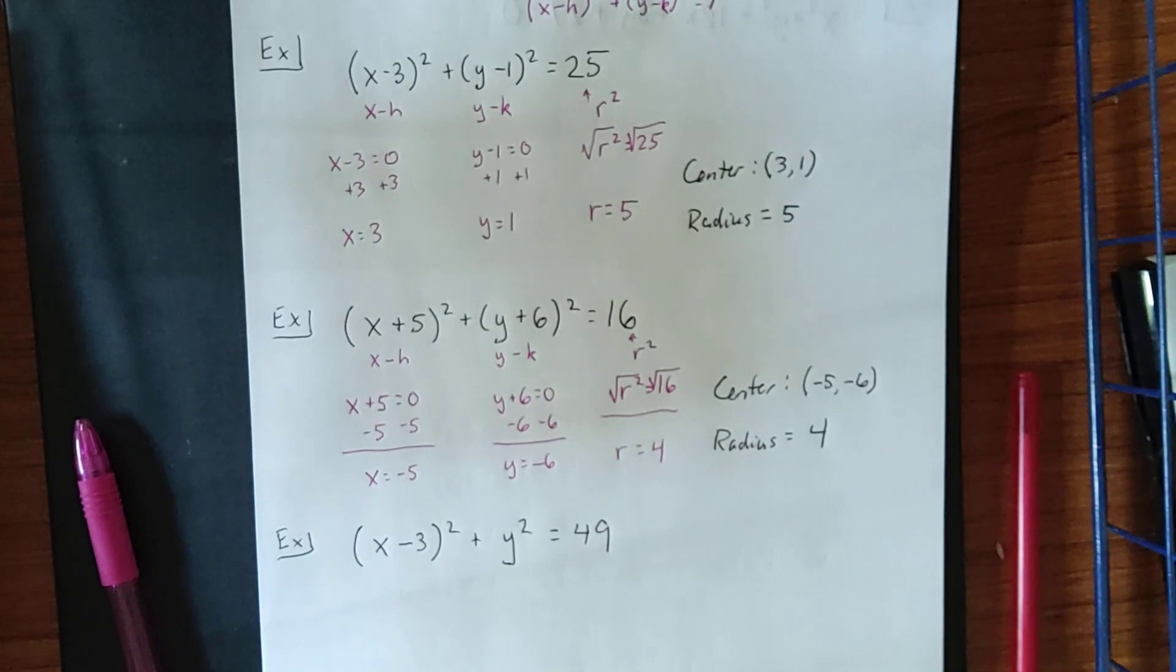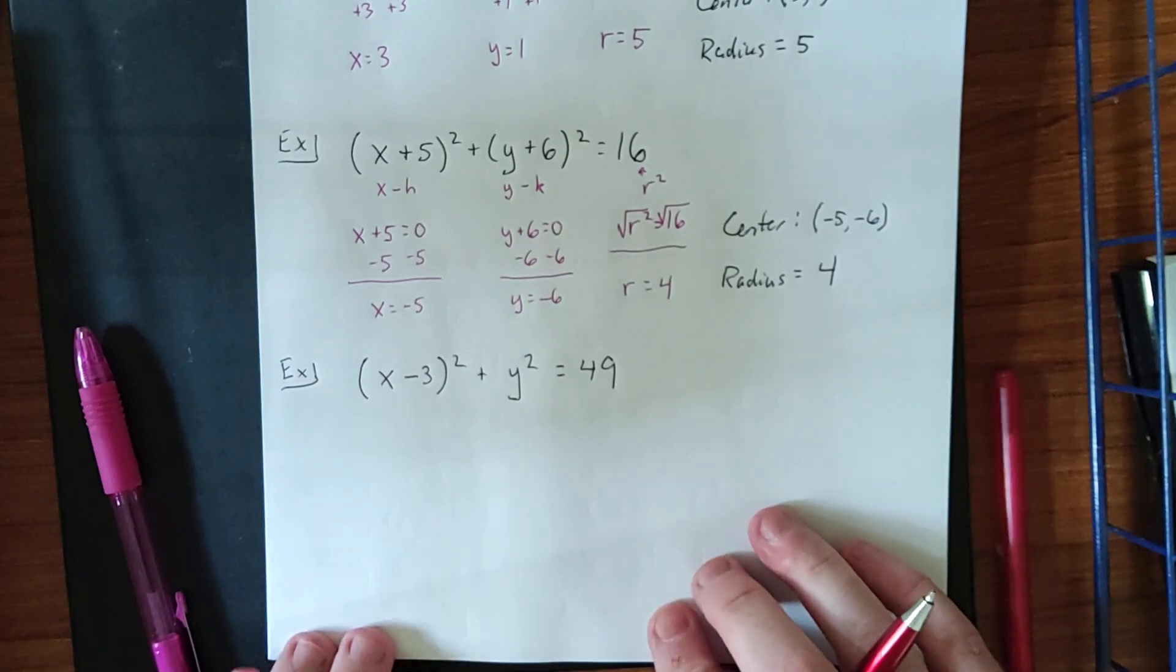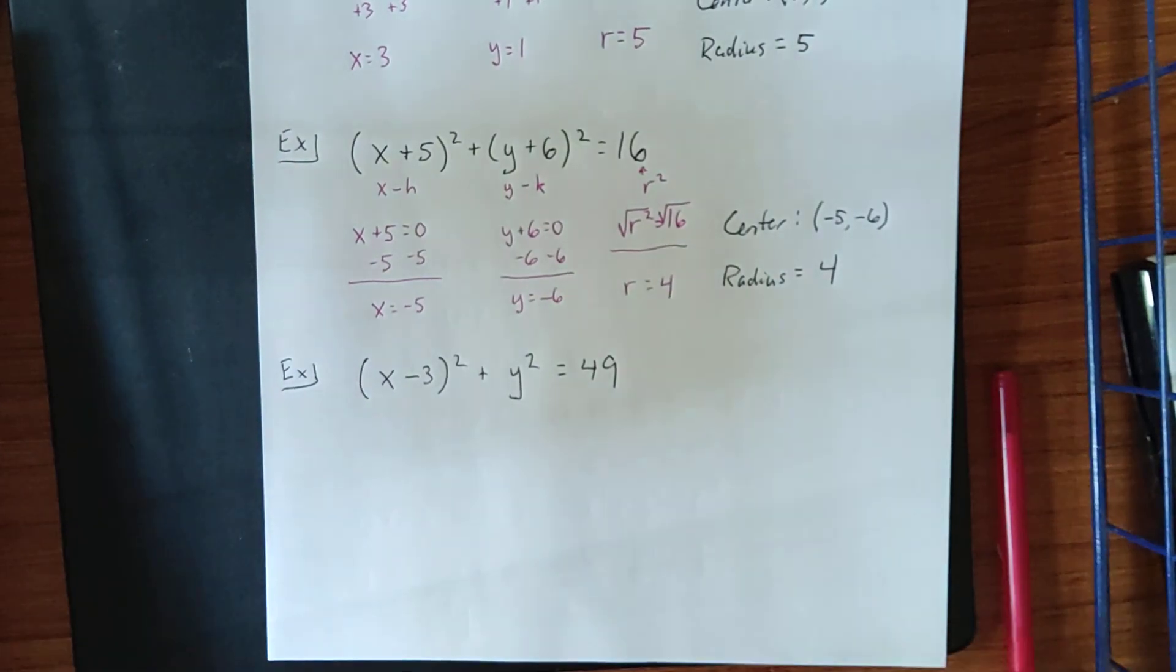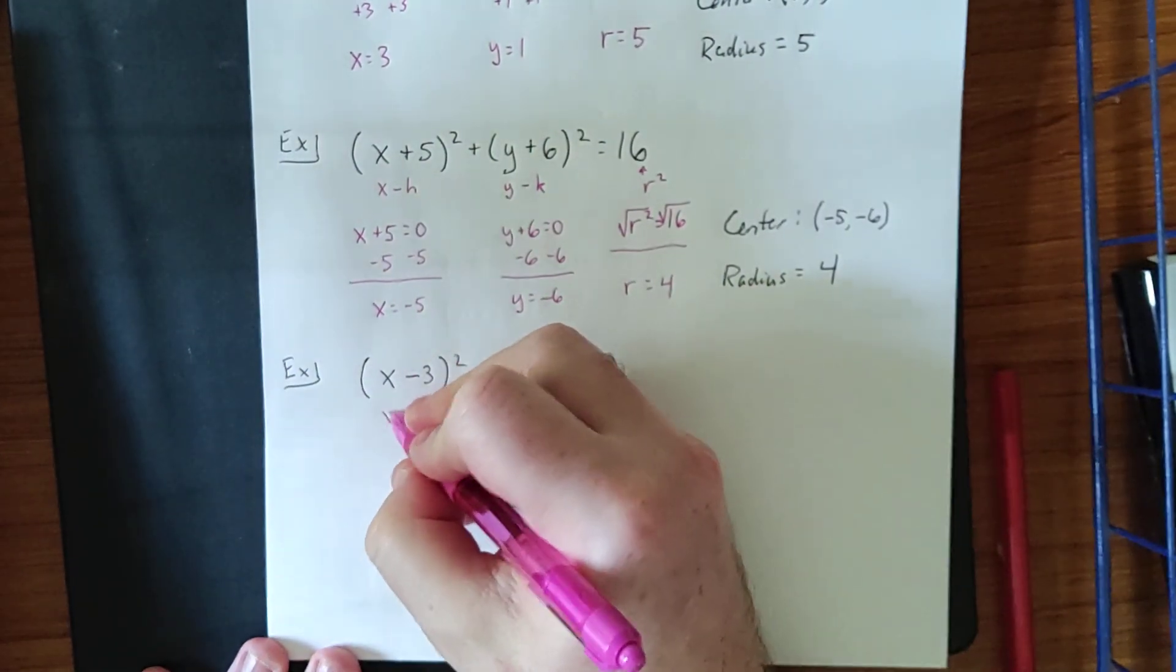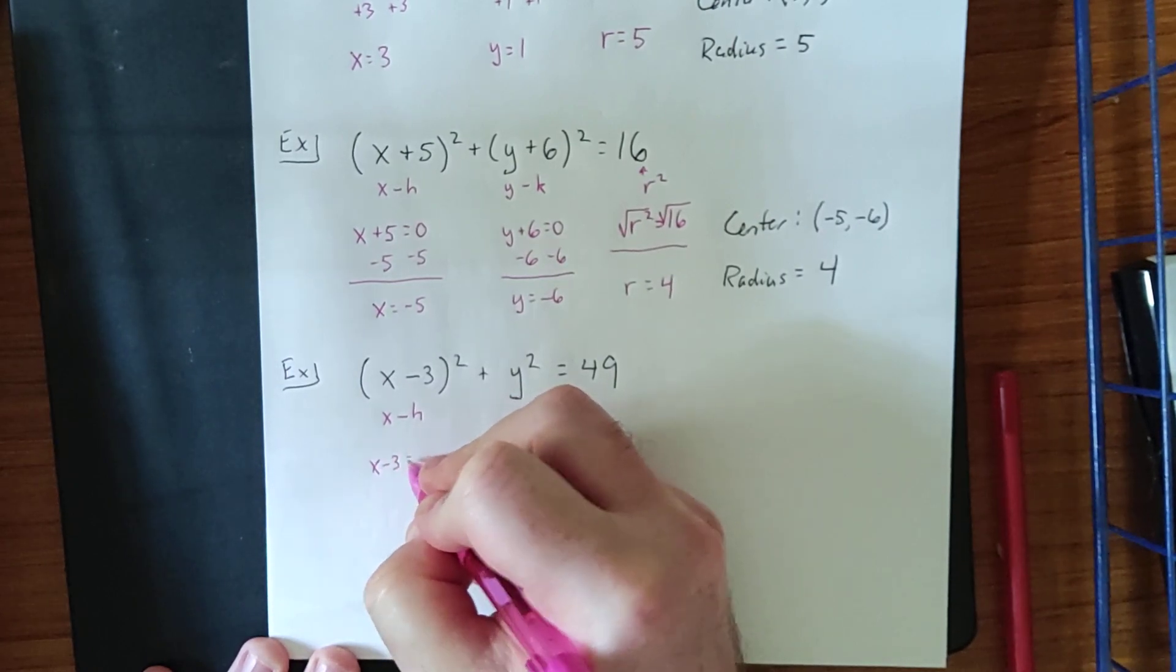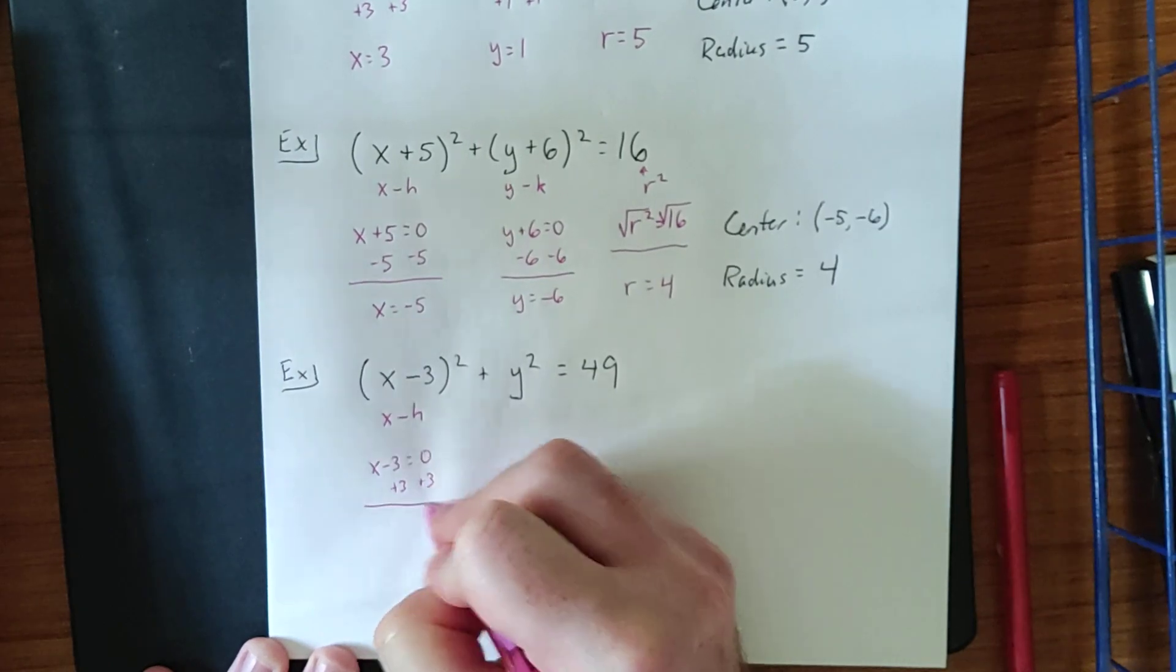Now, with those things in mind, let's take a look at our last example here. This one is a little bit different because we don't see anything being subtracted from the y. Now, same mentality as earlier. This is x minus h. Or, if we wanted to, we could also say x minus 3 is equal to 0, and do one step of algebra to solve for the x.